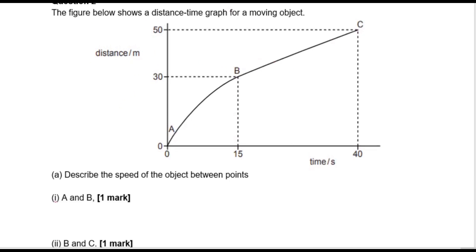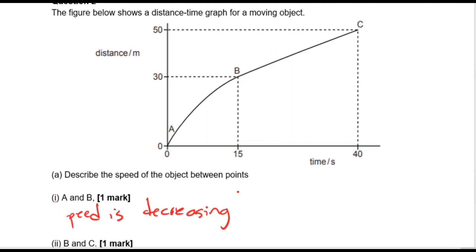In question two, we have a distance-time graph for a moving object. Between points A and B, we notice that it's a curve — not a straight diagonal line, but a curved diagonal line — which indicates that the distance is changing at a varying rate, meaning the speed is changing. We have to be specific about what type of speed change. Since it is curving downwards, that means the speed is getting smaller — so the speed is decreasing, starting faster and then getting lower and slower.